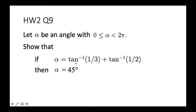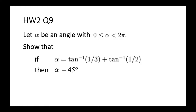45 degrees is a special angle — it comes from a square with a diagonal, forming a right-angled triangle with a 45-degree angle. To use the geometric approach: arctan(1/3) corresponds to a right-angled triangle with one side of length one and the other side of length three. Similarly, arctan(1/2) corresponds to a right-angled triangle with one side one and the other side two.